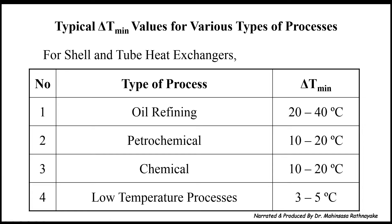For oil refining processes, the delta T minimum is generally taken between 20 to 40 degrees Celsius. For petrochemical applications, delta T minimum is taken from 10 to 20 degrees Celsius. Especially for chemical processes, the delta T minimum is generally taken between 10 to 20 degrees Celsius.